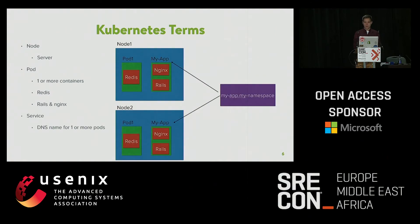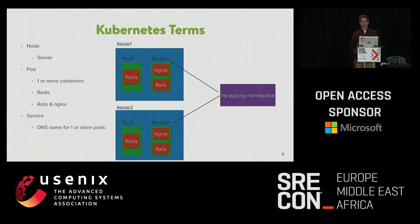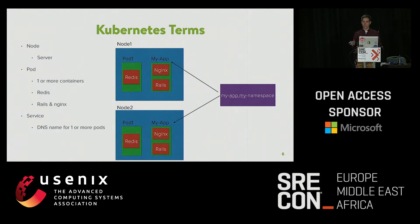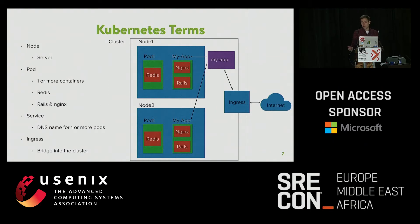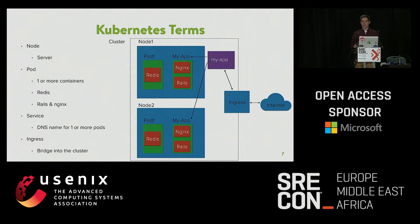There is the service — another Kubernetes resource. The easiest way to think about this is as a DNS name that will round-robin load balance to one or more pods that match it. It does a lot more than that, but we'll start there. And finally, ingress: a service is local to the cluster only, so ingress is the resource that bridges the internet to your services.